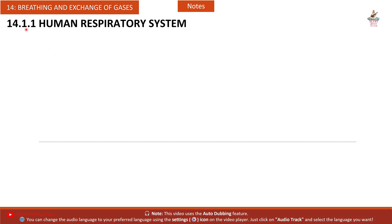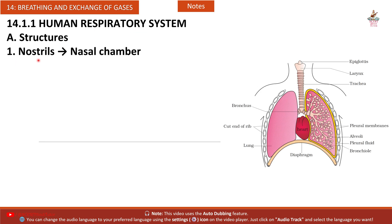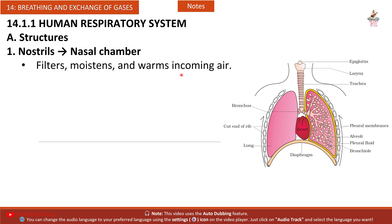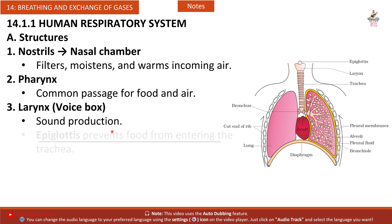Section 14.1.1 — Human Respiratory System. Structures: First, nostrils and nasal chamber — filters, moistens, and warms incoming air. Second, pharynx — common passage for food and air. Third, larynx (voice box) — responsible for sound production; the epiglottis prevents food from entering the trachea.